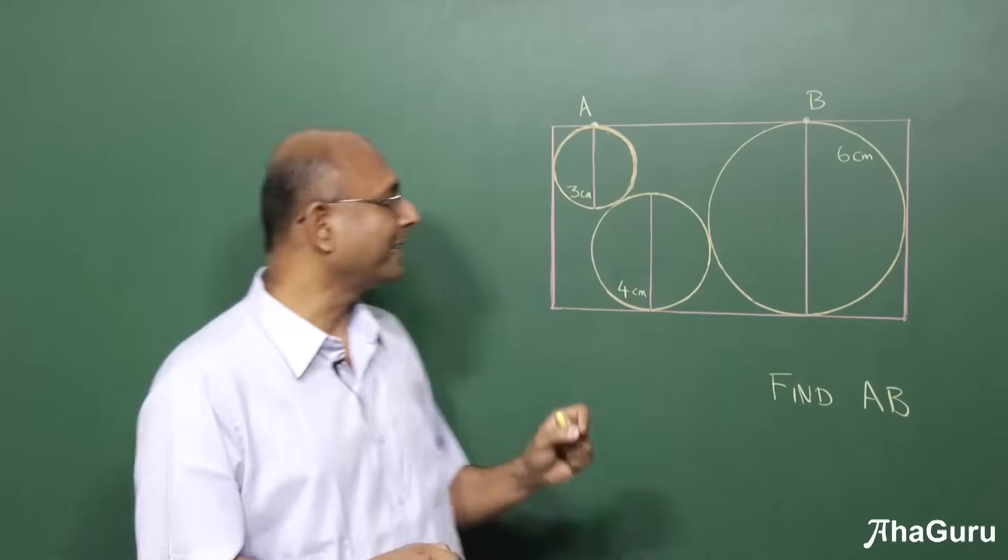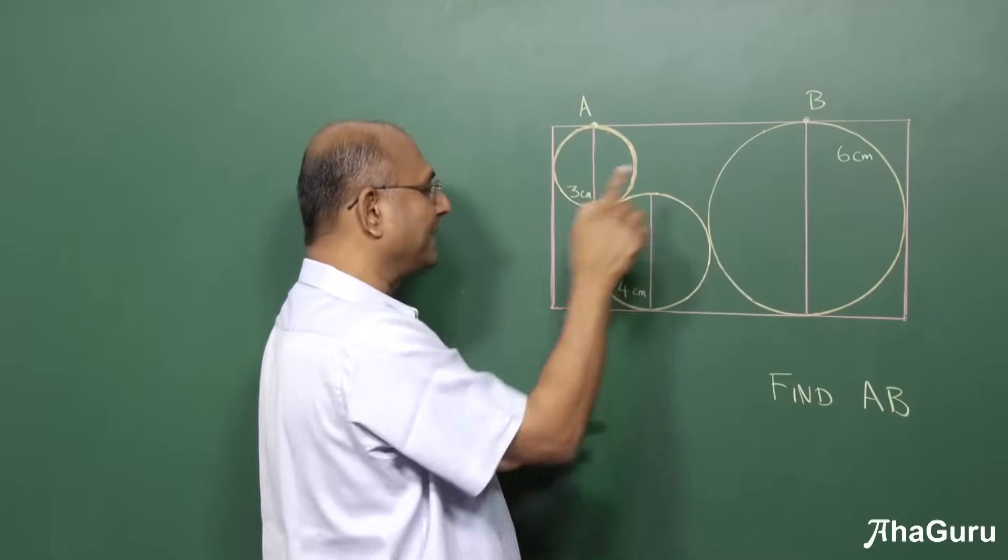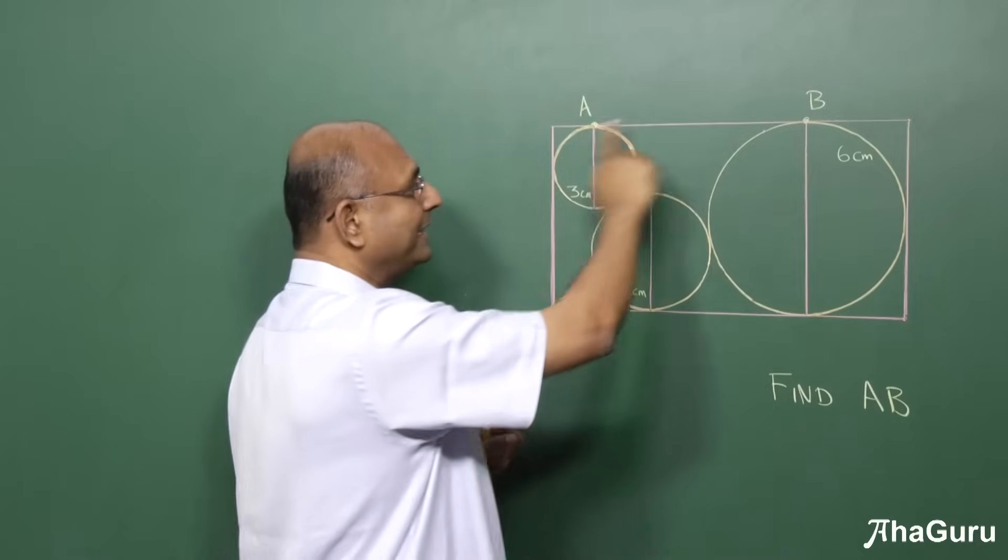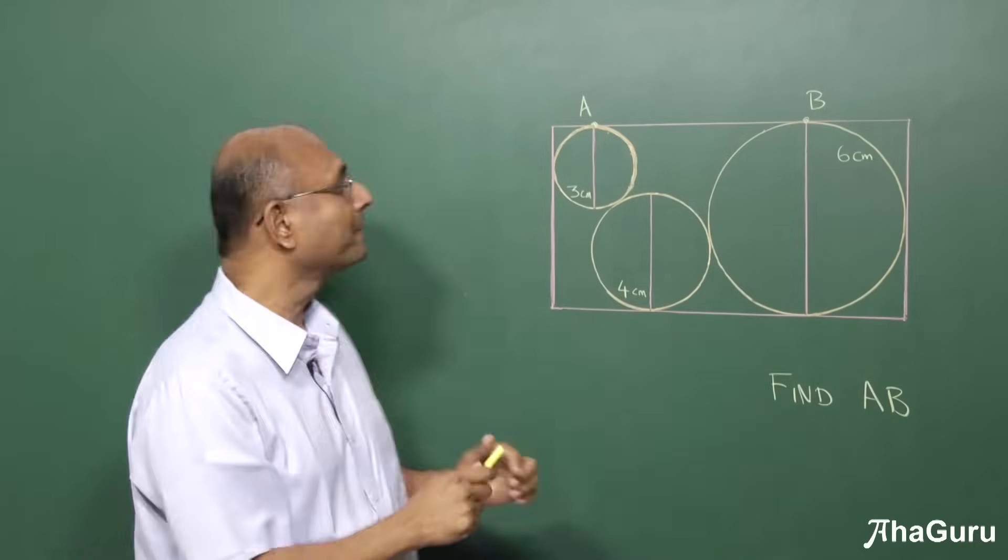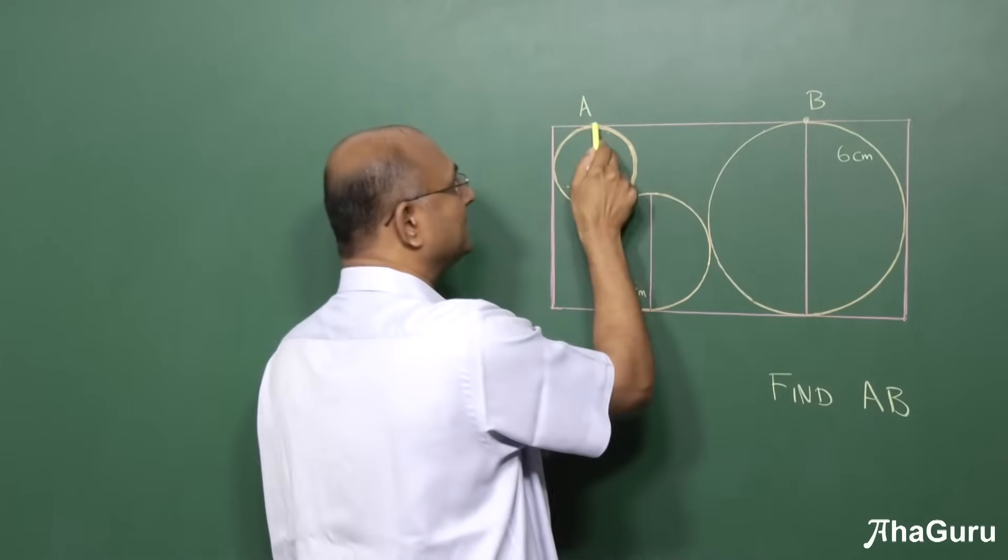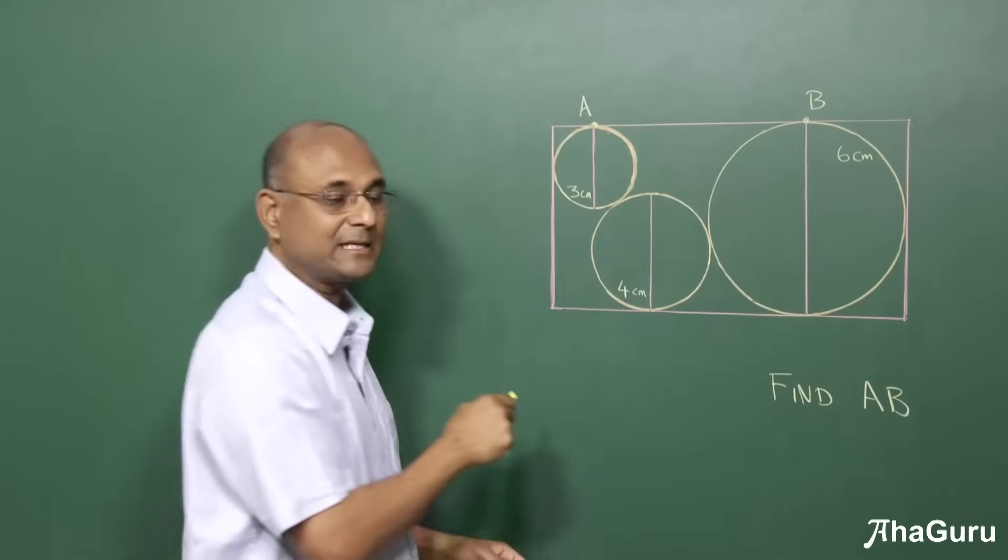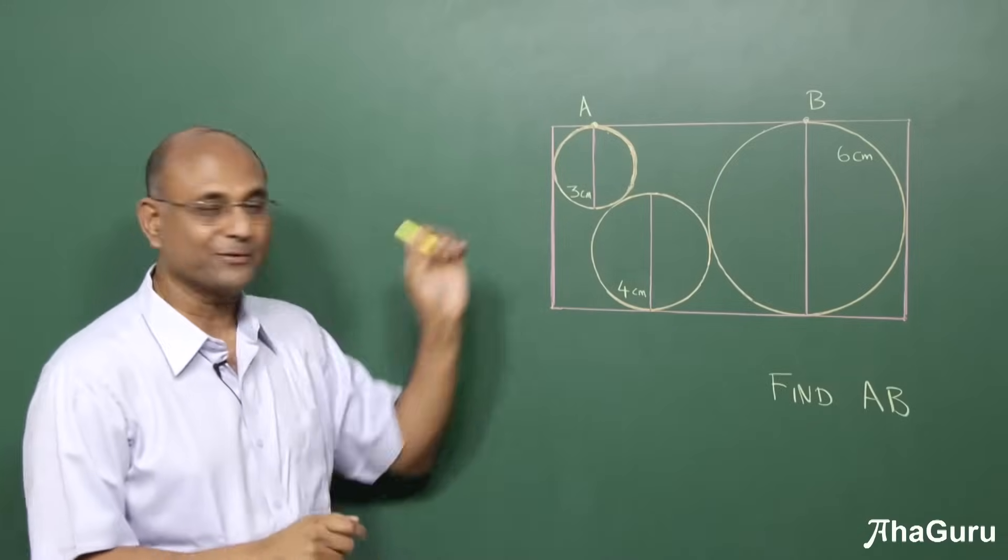The question is a simple one. There are three circles of different diameters: 6 centimeters, 4 centimeters, and 3 centimeters. The circles are touching each other and they are inscribed inside a rectangle. The size of the rectangle is not given, and the question is find the distance from A to B. A is the point that the smallest circle is touching the rectangle, and B is where the largest circle is touching the rectangle. The distance between A and B, that is the question.